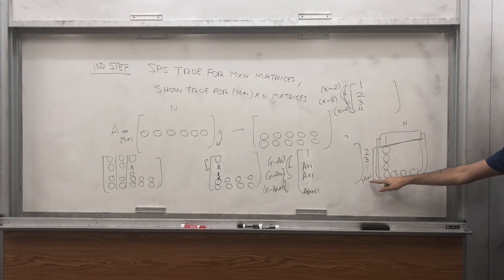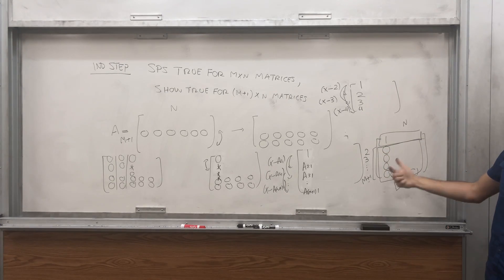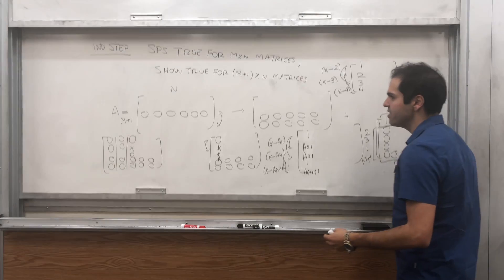The matrix has size precisely m times m. So m plus one minus two, which is m minus one, plus one, which is m. So B is m by m.